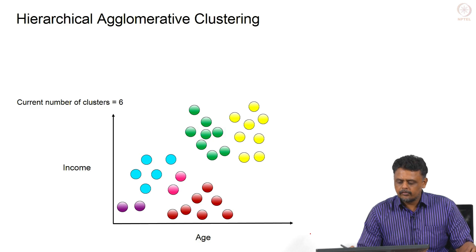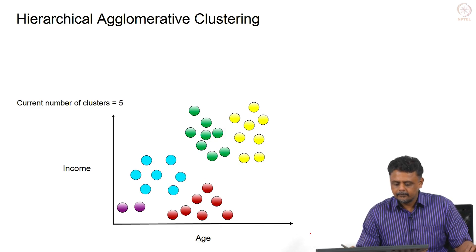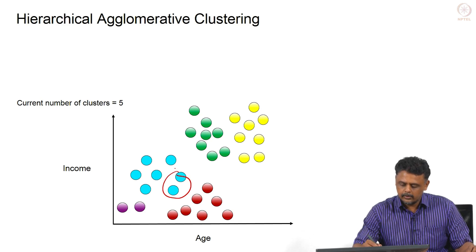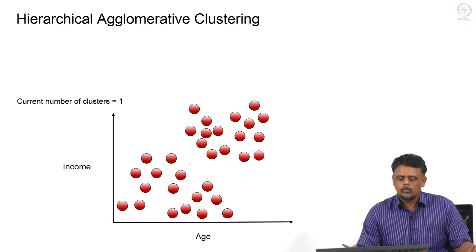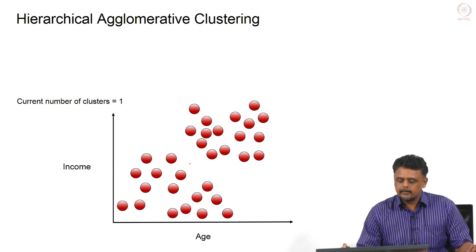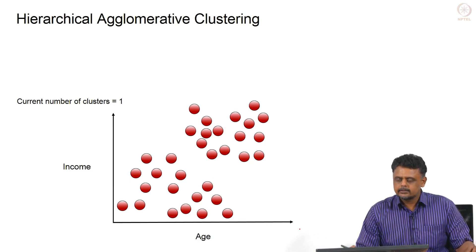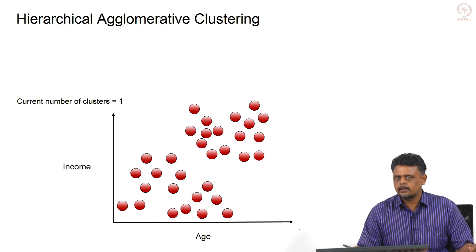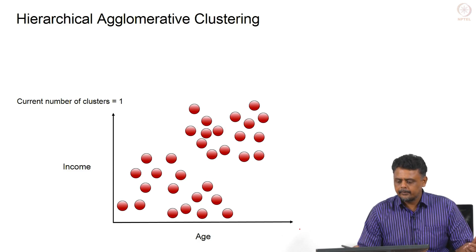Starting with about six clusters, each color denoting a cluster, we merge them step by step: from six to five, four, three, two, and finally one. The algorithm stops when the entire dataset is assigned to a single cluster. We start off with individual data points, pair them up based on a dissimilarity metric, and at the last step the algorithm results in one cluster.